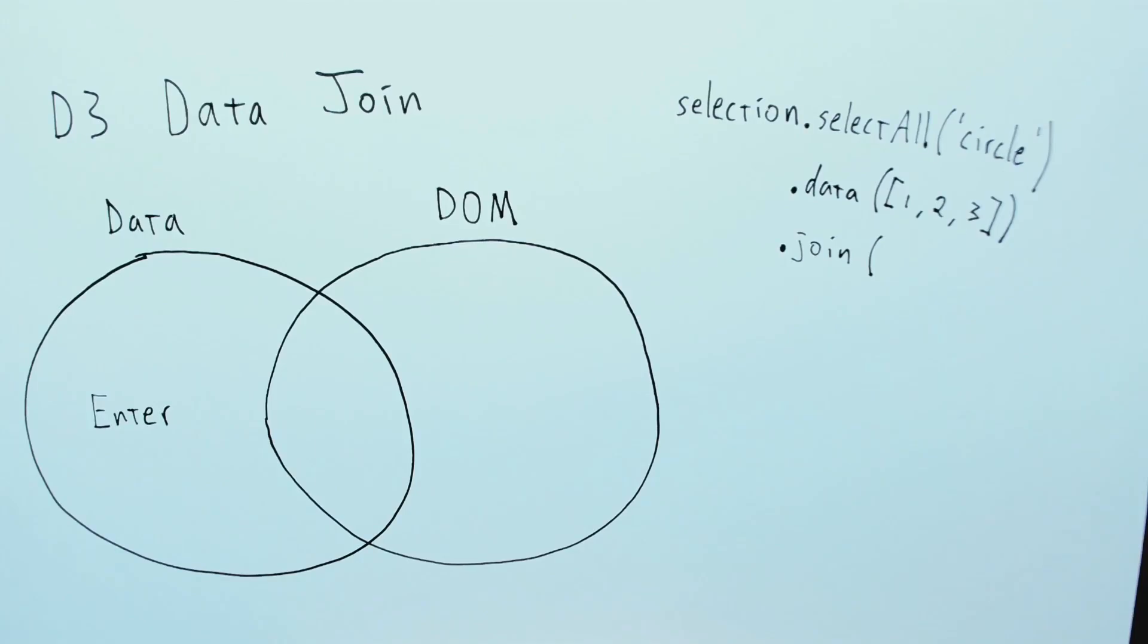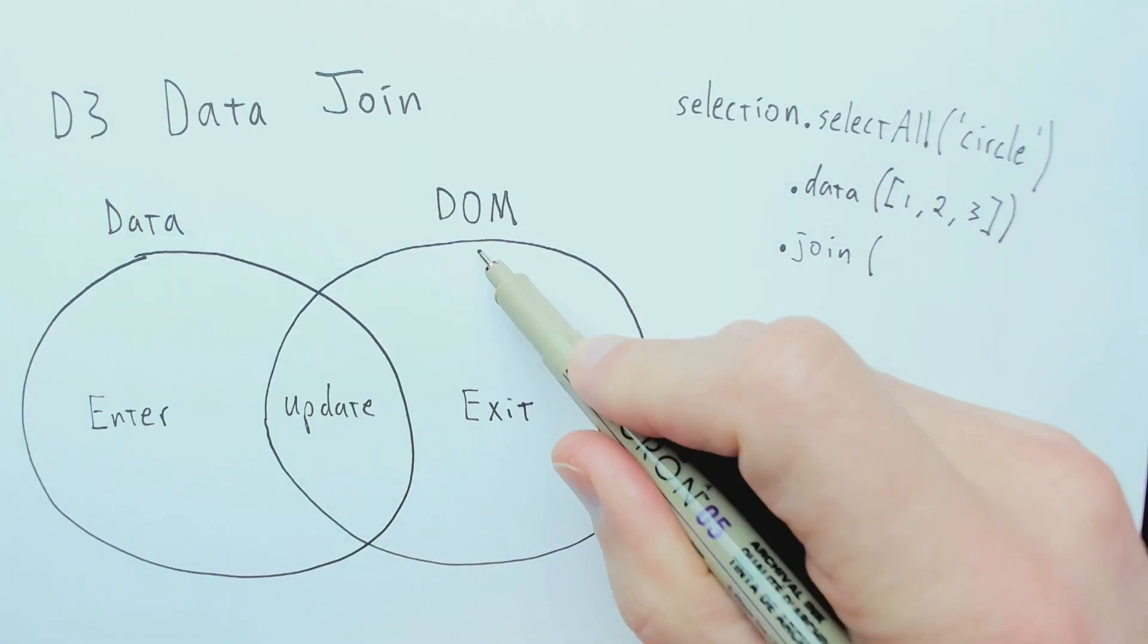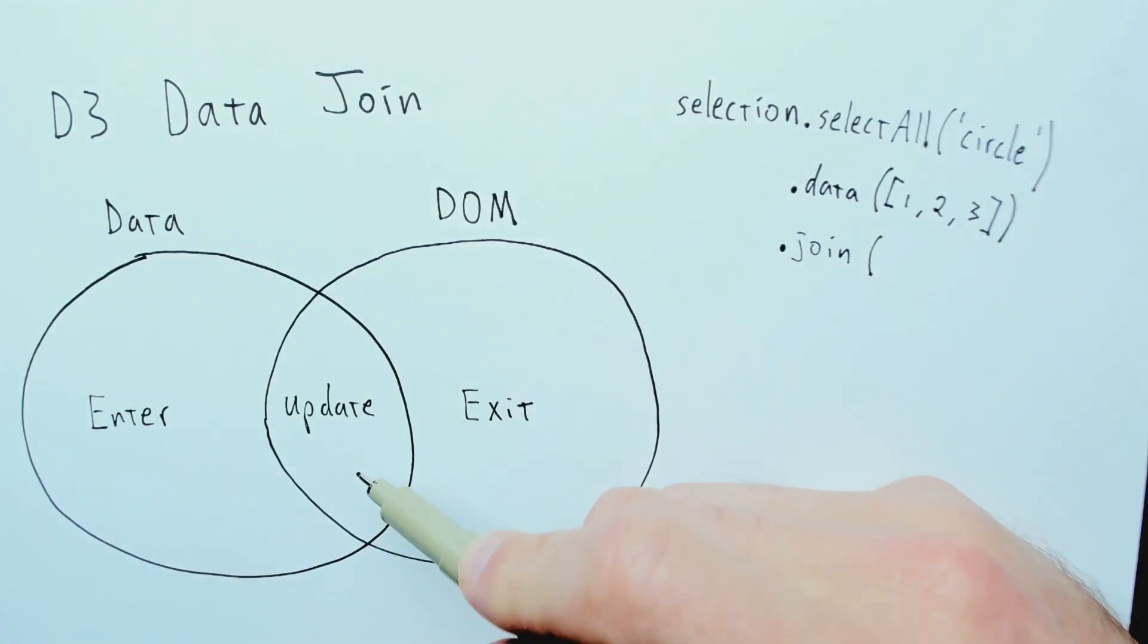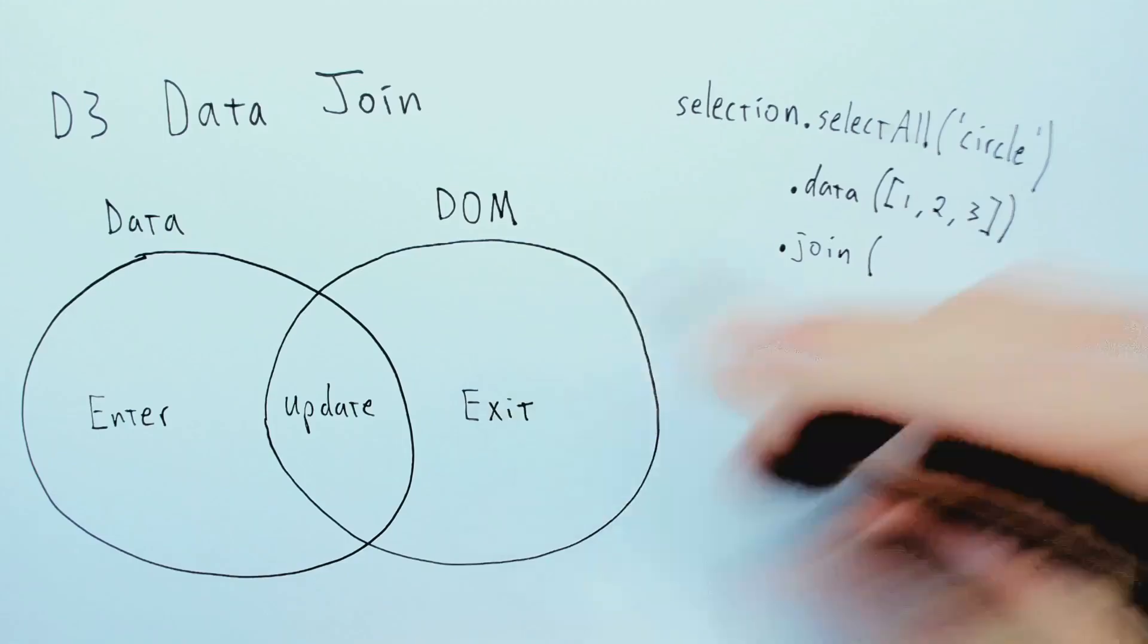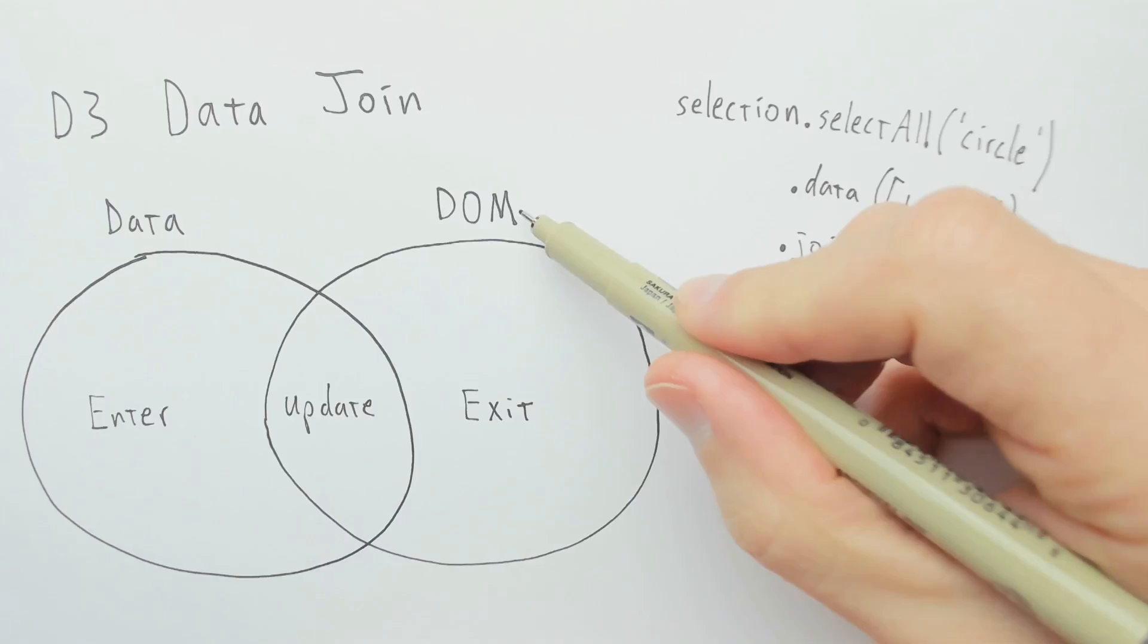It's a shorthand for the more complex case of invoking .join, which is where you pass in explicitly these three different cases: enter, update, and exit. Now, update and exit don't really trigger the first time this code runs. The update case happens when there are existing DOM elements corresponding to the data elements. And the exit case happens when the data array changes to have fewer elements, and then there are leftover DOM elements that need to be removed.